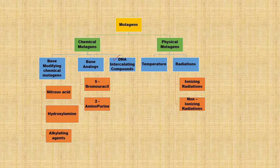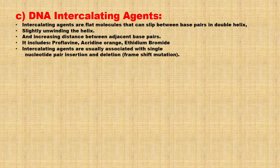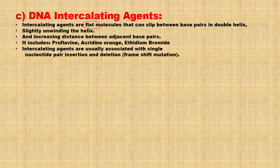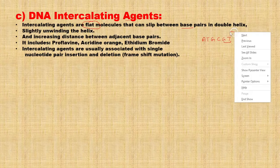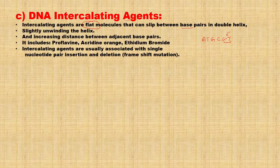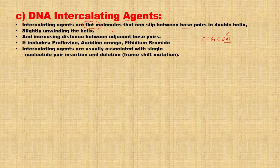Continuing with DNA intercalating compounds: if we talk about DNA intercalating compounds or DNA intercalating agents, these agents are basically flat molecules. Their appearance is flat because they get fitted between two nitrogen bases. For example, in a sequence A, T, G, C, G — these DNA intercalating agents will get fitted down between the bases. That is only due to their flat molecular appearance.